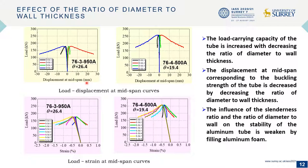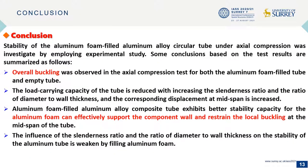Moreover, comparing with the empty tube, the influence of the slenderness ratio and the ratio of diameter to wall thickness on the stability of the aluminum tube is weakened.